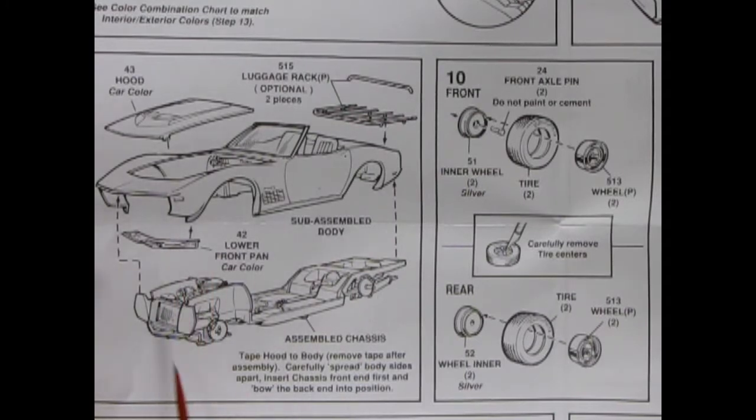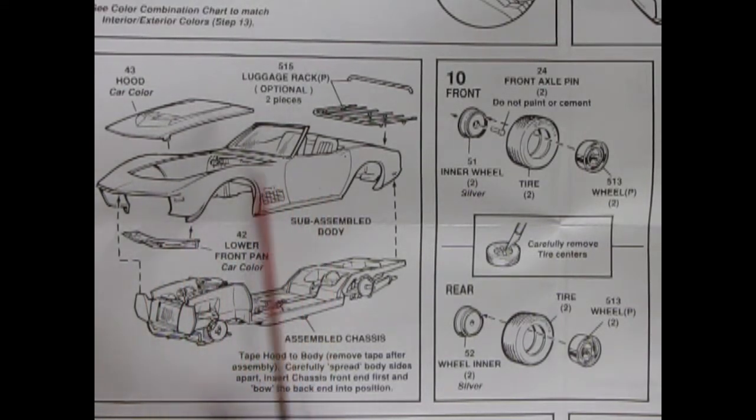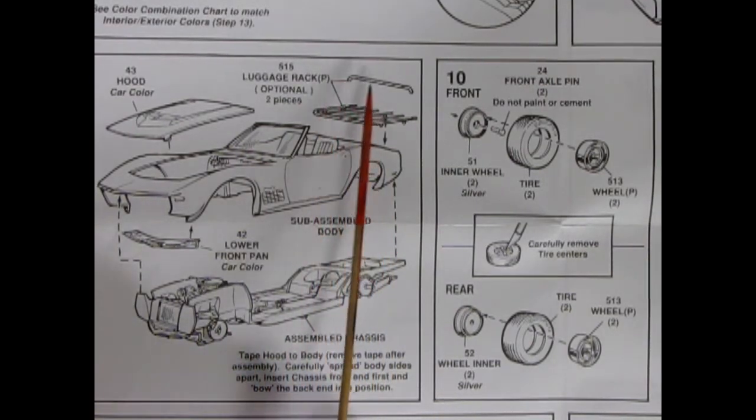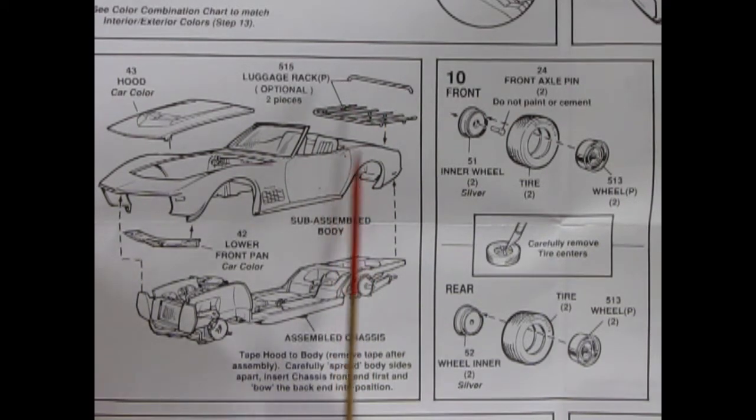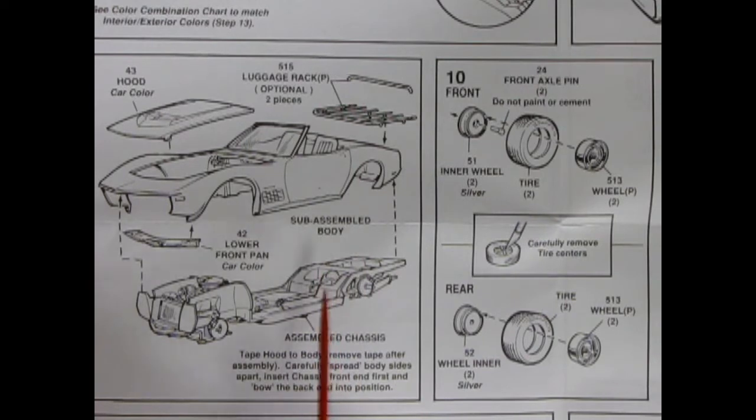Let's do steps 9 and 10 together as I can fit them both in this frame here. So here we have our hood which is a car color and our lower front pan. The glued up body and everything will pop onto our assembled chassis. There's an optional luggage rack as well, a top and a bottom. This is always good when you're going off to the beach or whatever and you need extra room in the back. Because I don't think these actually had any trunks. So anyway yeah because the spare tire is going up in there and all kinds of other things. Tape hood to body. Remove tape after assembly. Carefully spread body sides apart. Insert chassis front end first and bow the back end into position. So there you go.